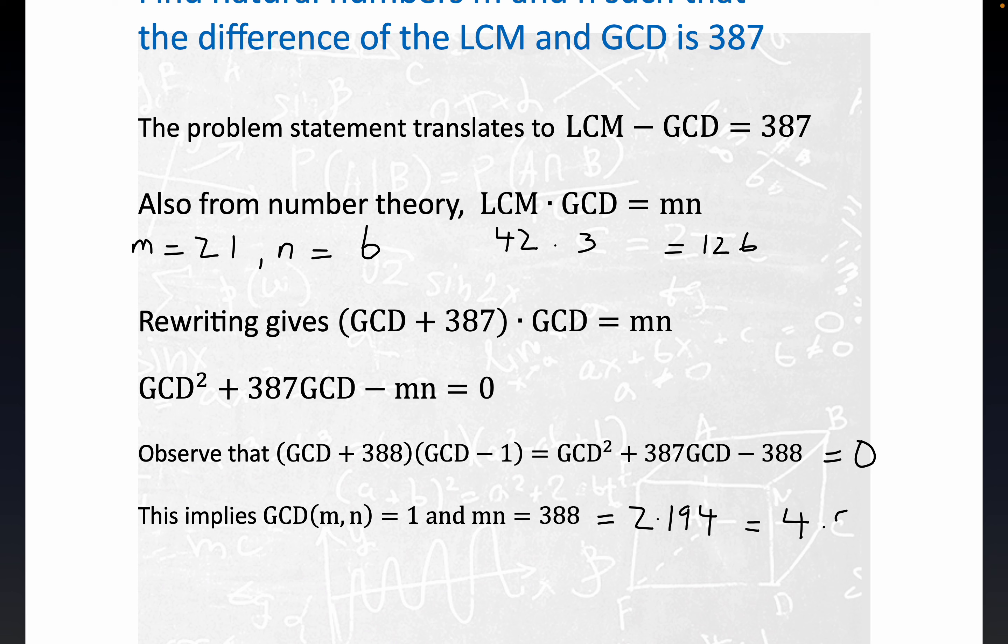Notice it's not possible to take 2 and 194 as our solution for M and N, because the GCD of 2 and 194 is actually 2. But the GCD of 4 and 97 is 1, which is what we want. So GCD is 1.